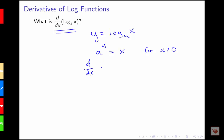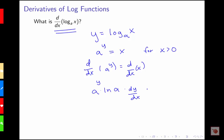We're going to take the derivative of both sides: d/dx of a to the y equals d/dx of x. I'm going to have to use the chain rule on the left-hand side, using implicit differentiation. The derivative of a number raised to a variable power is the number raised to that power times the natural log of my base, the natural log of a, and then times dy/dx using the chain rule. This equals 1, the derivative of x. So now I just need to solve for dy/dx.